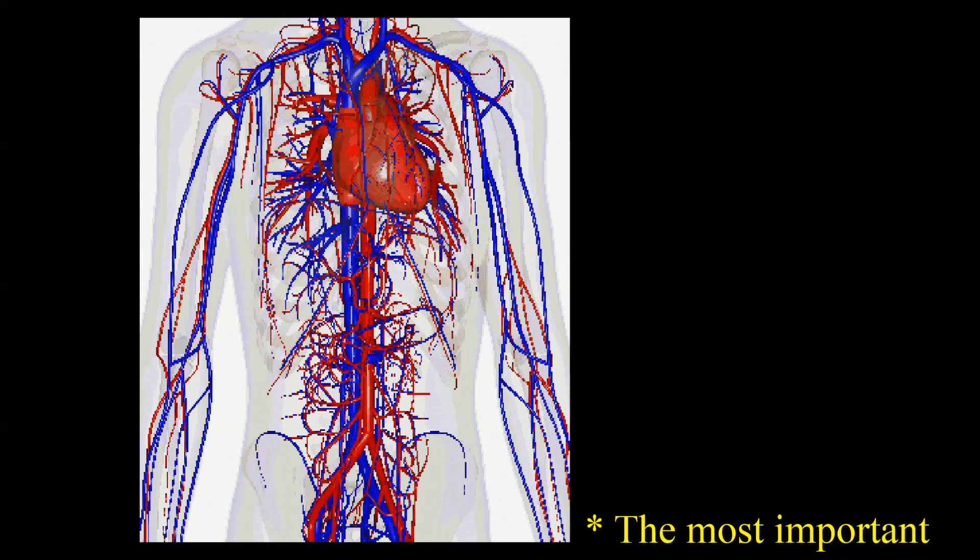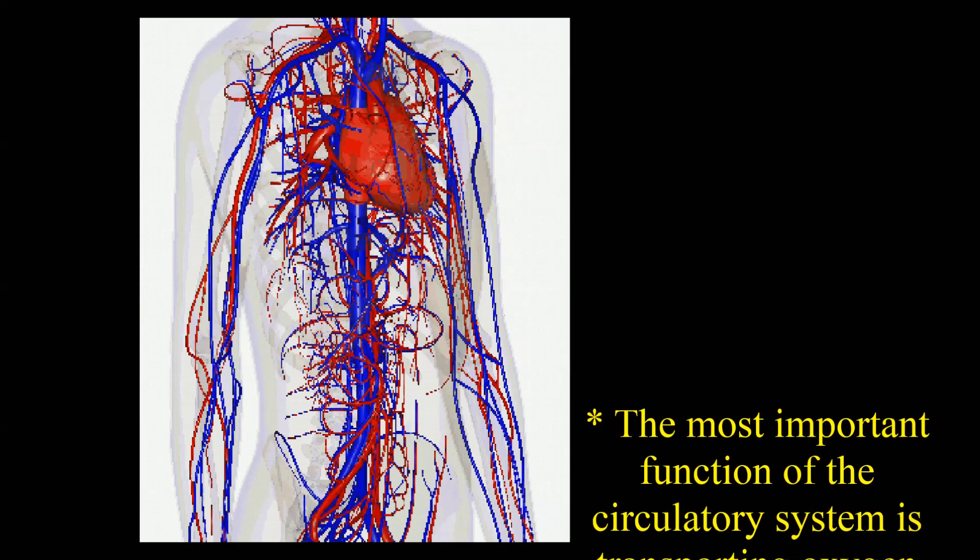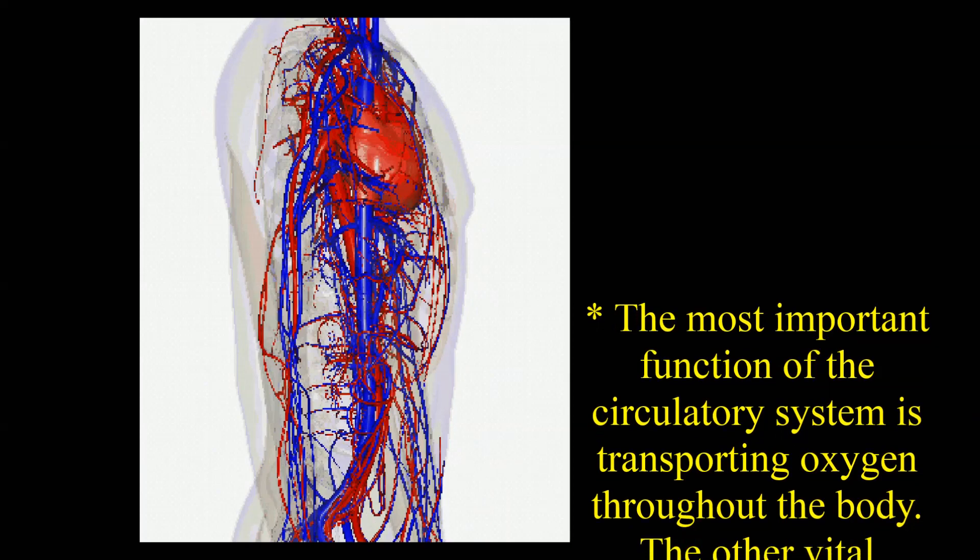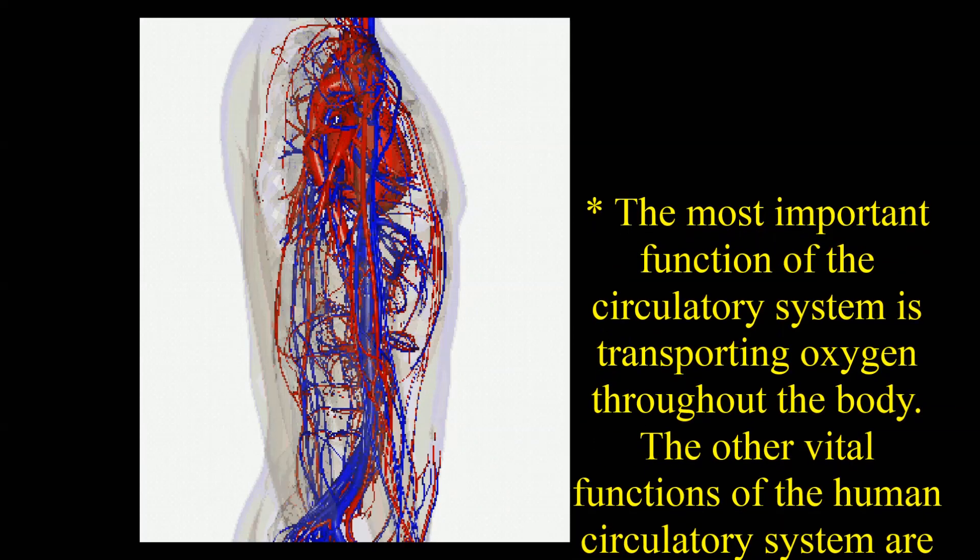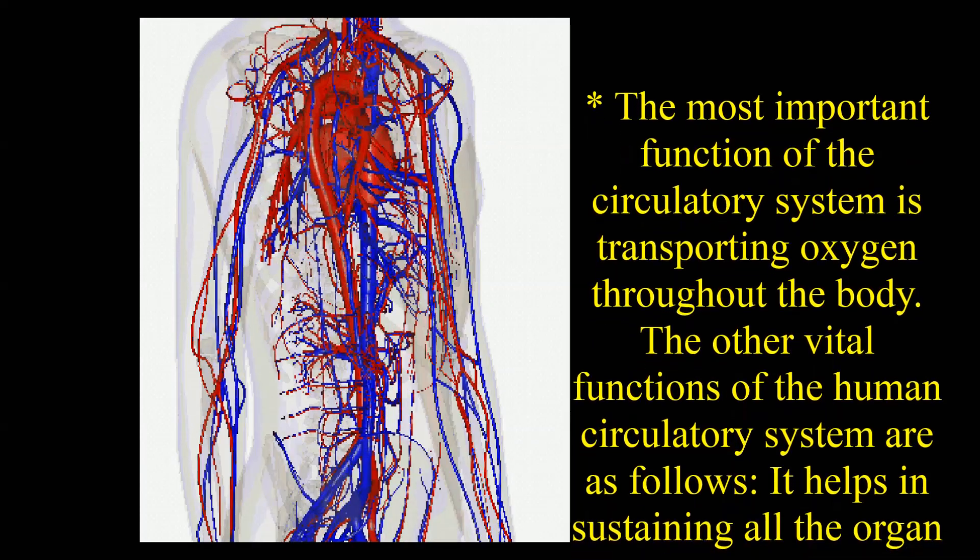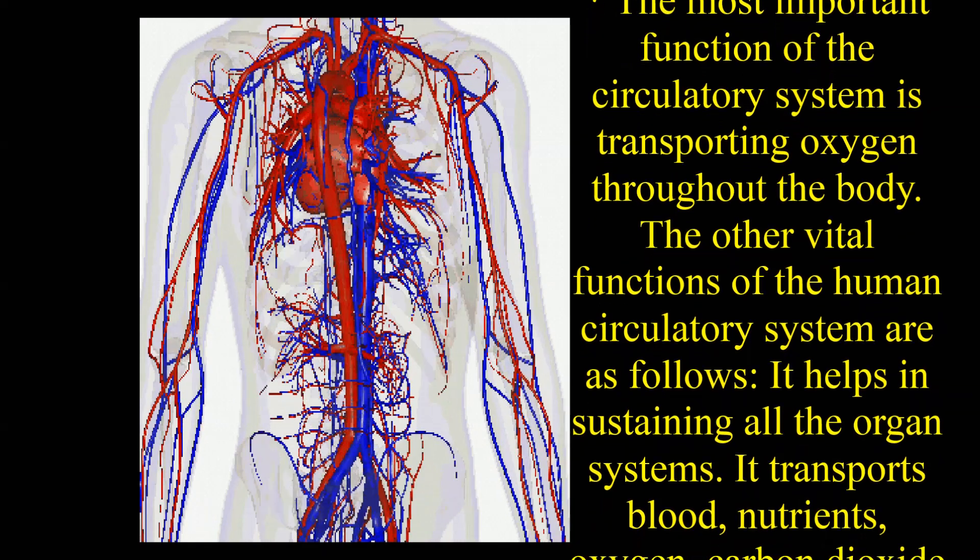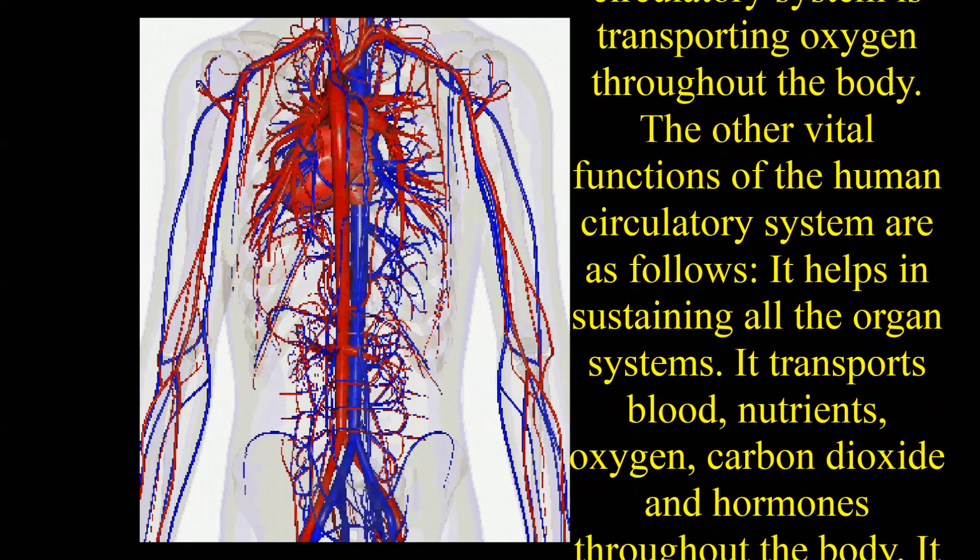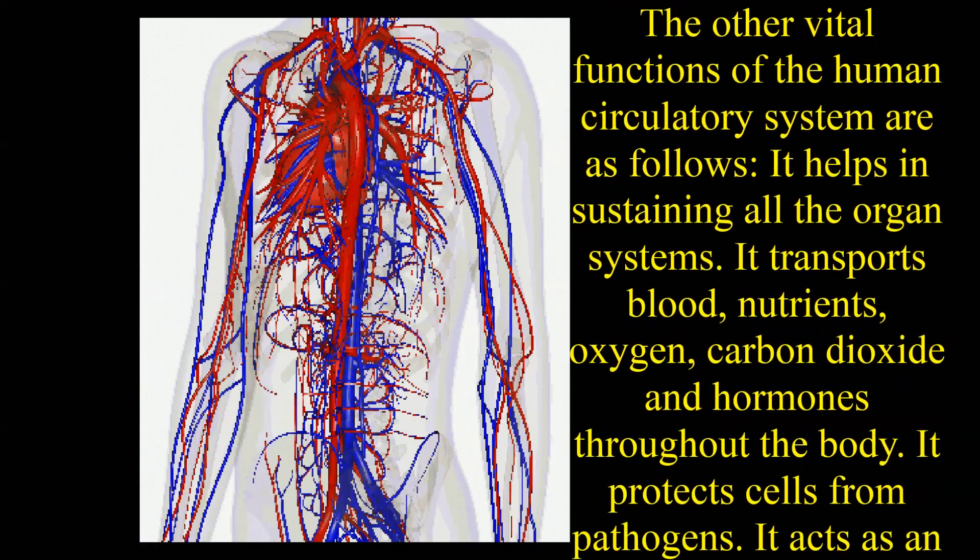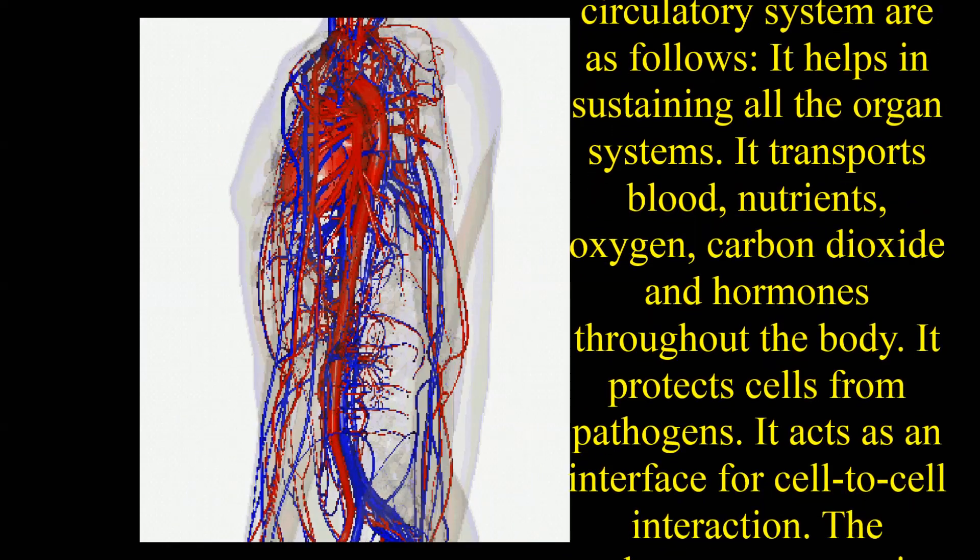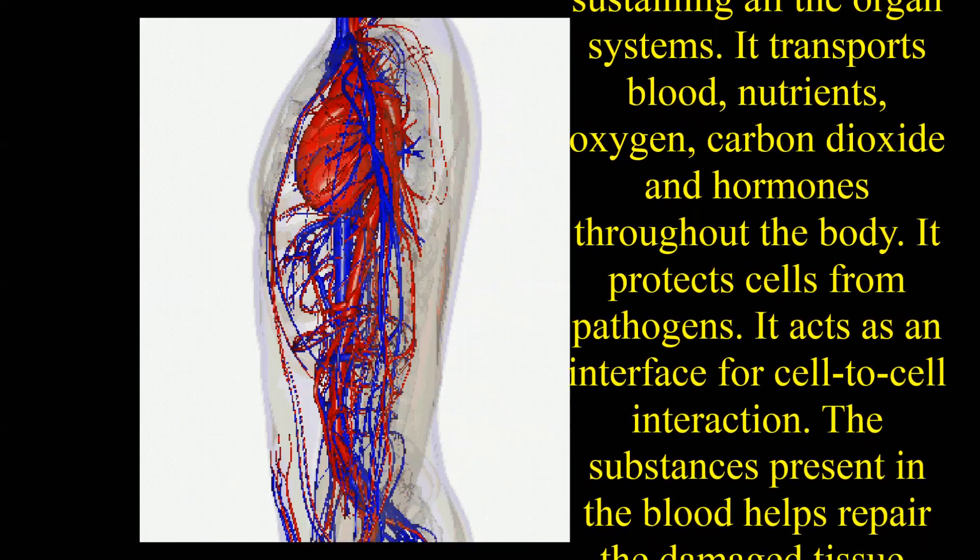The most important function of the circulatory system is transporting oxygen throughout the body. Other vital functions include sustaining all the organ systems and transporting blood, nutrients, oxygen, carbon dioxide, and hormones throughout the body.